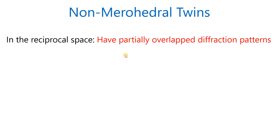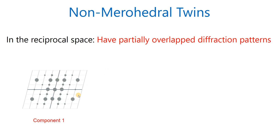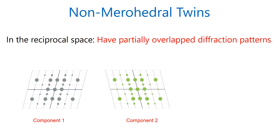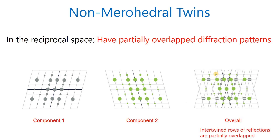In a merohedral twin, the diffraction pattern is completely overlapped, so it cannot be handled at the integration part. But we can handle the non-merohedral twin during data integration. Component 1 or domain 1 has certain reflections. Component 2 is shown in a different color. Overall, some reflections are partially overlapping. Intertwined rows of reflections are partially overlapped. In non-merohedral twin the reflections are partially overlapped, but in merohedral twin they are completely overlapped.